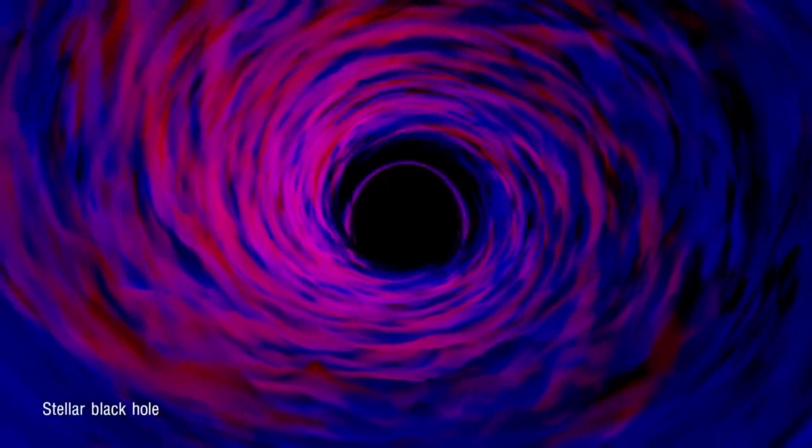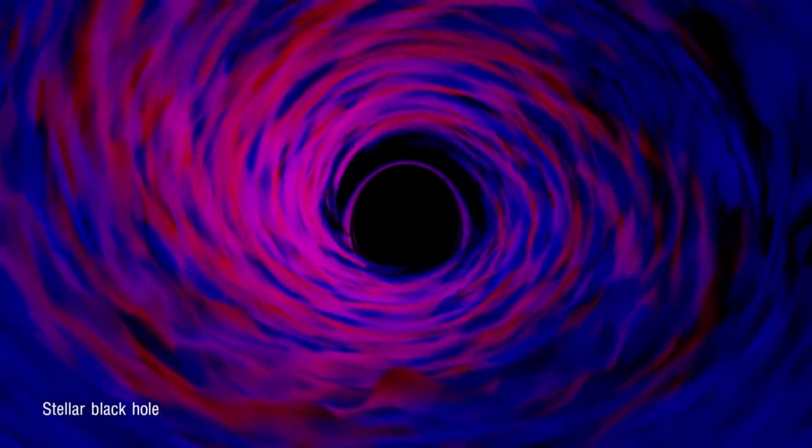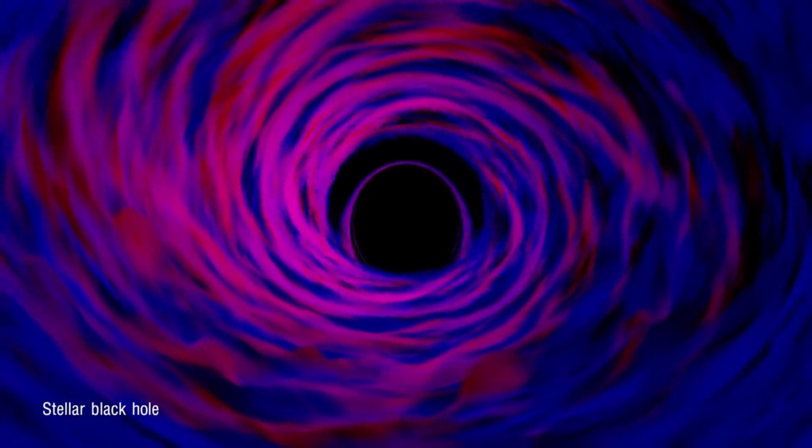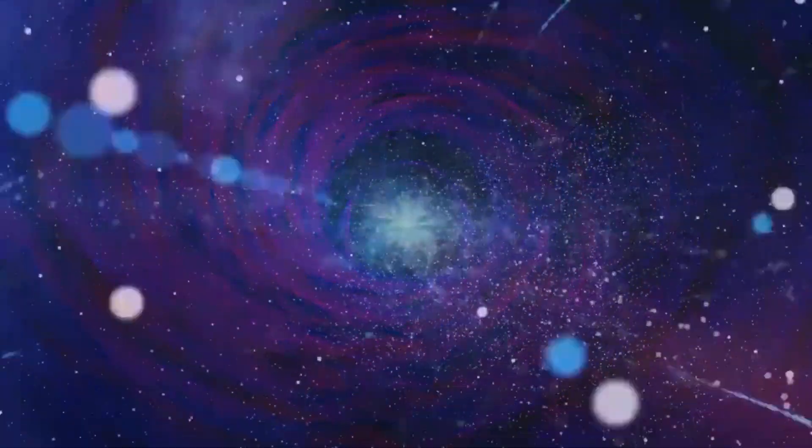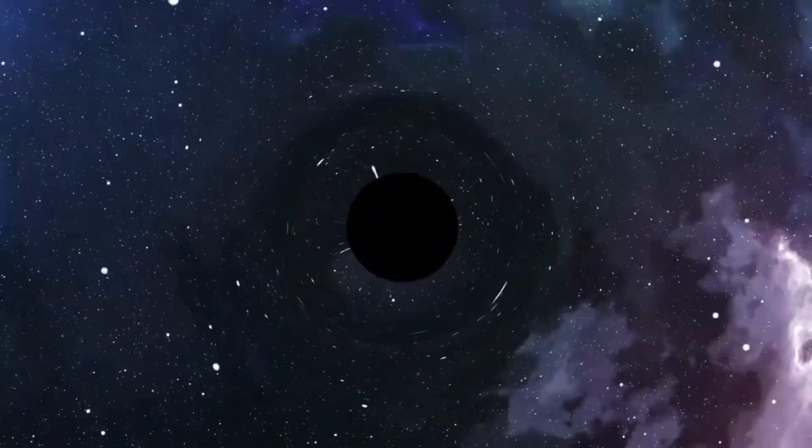Stellar black holes are perhaps the most common type in the universe. They are remnants of stars that have reached the end of their evolutionary process, following supernova explosions. Alongside white dwarfs and neutron stars, they represent the final stages of stellar evolution.